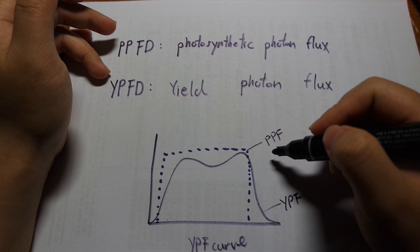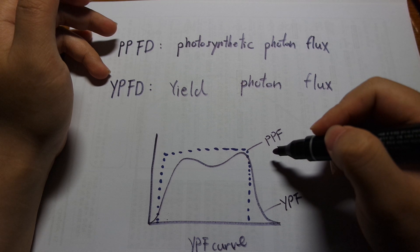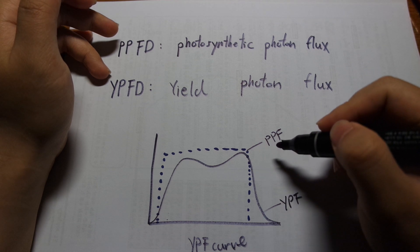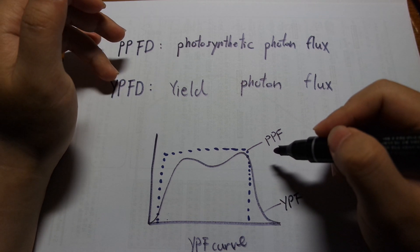PPFD actually does not put any emphasis on the wavelength of photons itself, so red photon, blue photon, green photon, as long as it is a visible light PPFD does not care. PPFD will consider all photons equal, green photon is the same as red photon.